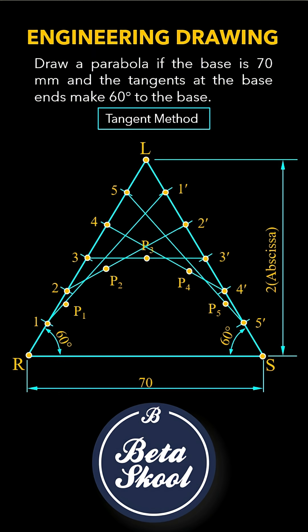Draw a smooth curve through these points by freehand or by using a French curve. And that's it. We've successfully constructed a parabola by following the tangent method.